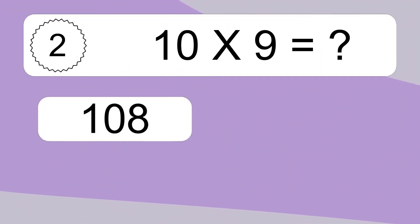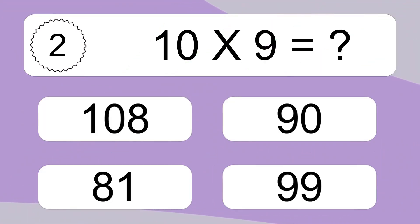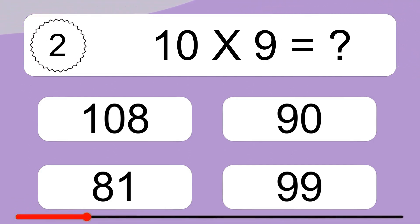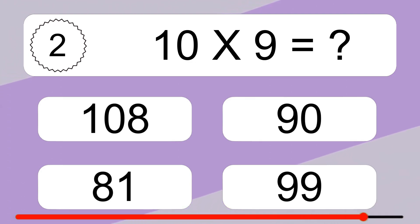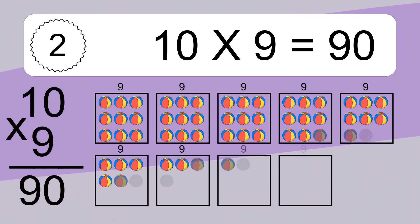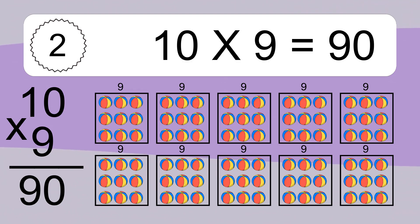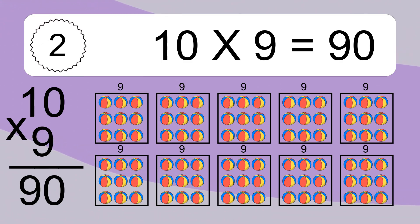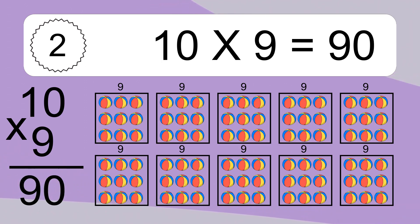10 times 9 equals what? 10 times 9 equals 90. We have 10 boxes, and each box has 9 colorful balls inside. If you count all the balls in all the boxes together, you will have 10 times 9 balls. This equals 90 balls.